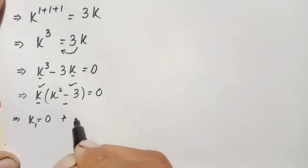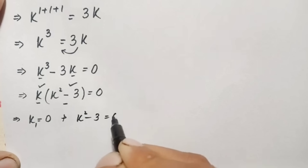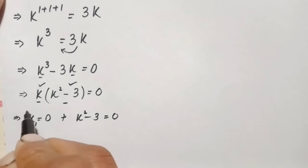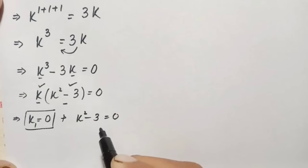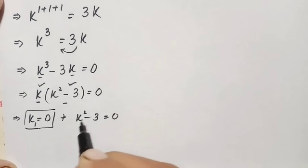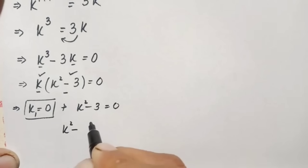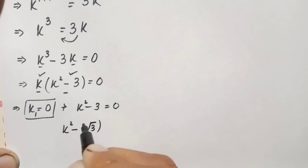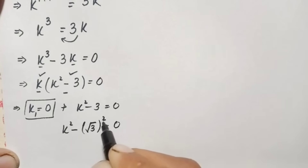From the first case, we get k₁ equals zero, which is the obvious solution. From the second case, we have the equation k squared minus 3 equals zero. We will now solve this quadratic equation to find two more solutions.